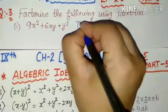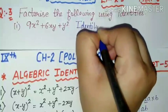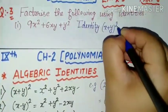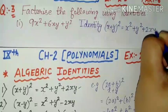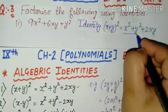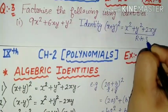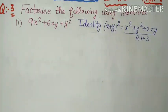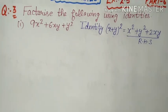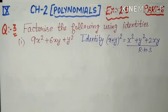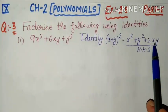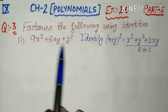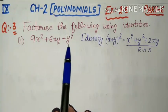So jo identity use ho rahi hai, hame usko mention karenge. Identity use ho rahi hai: x plus y whole square, that is equal to x² plus y² plus 2xy. Ab hamare paas jo question mein yeh term given hai, yeh humhe right hand side ki form mein given hai. Hame isko left hand side ki form mein likhna hai — iske factors banana hai. So humne first of all identity check karna hai, aur identity mein bhi yeh check karna hai ki kaun si term right hand side given hai ya left hand side, uske according hum usko solve karenge.